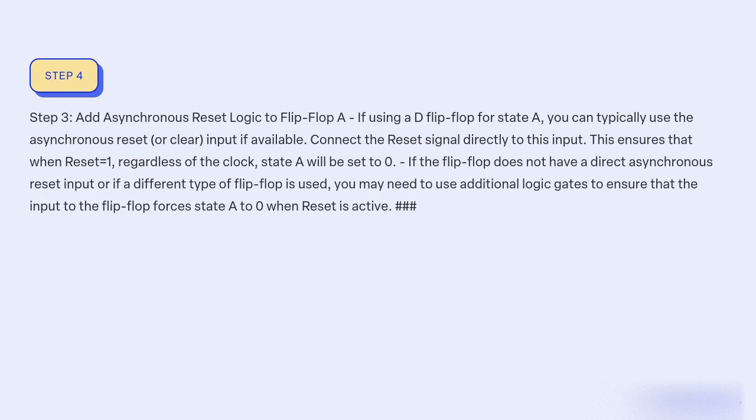Step 3: Add asynchronous reset logic to flip-flop A. If using a D flip-flop for state A, you can typically use the asynchronous reset or clear input if available. Connect the reset signal directly to this input. This ensures that when reset=1, regardless of the clock, state A will be set to 0. If the flip-flop does not have a direct asynchronous reset input or if a different type of flip-flop is used, you may need to use additional logic gates to ensure that the input to the flip-flop forces state A to 0 when reset is active.